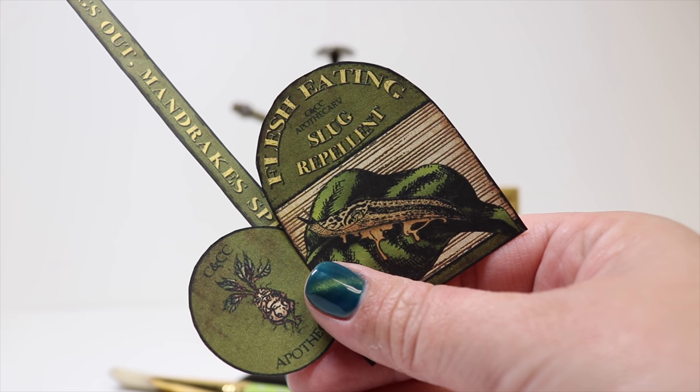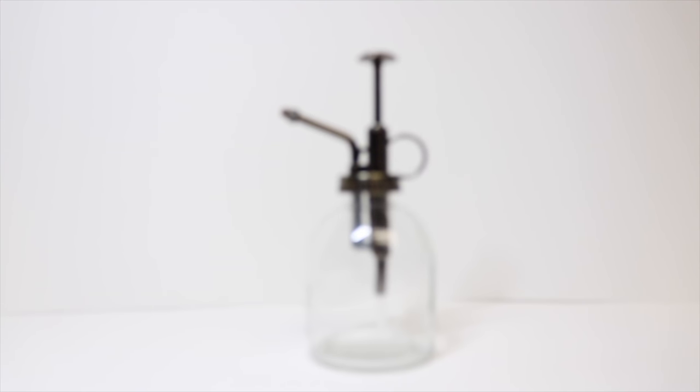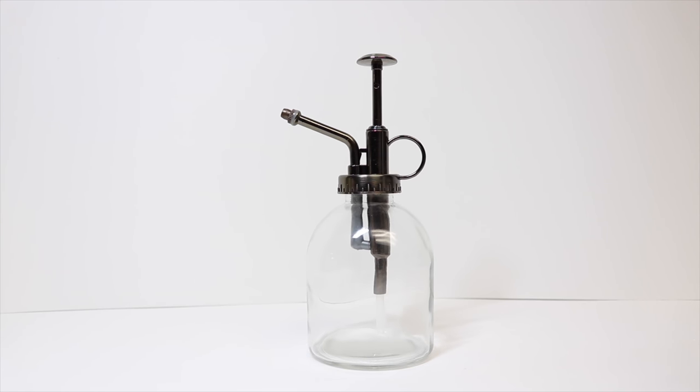Now let's see what you need to create the prop version of this. To make the prop version of our flesh-eating slug repellent we will need one plant mister. I found this one at Michael's, but I'll put a link in the description down below to one on Amazon as well. Any plant mister will work.